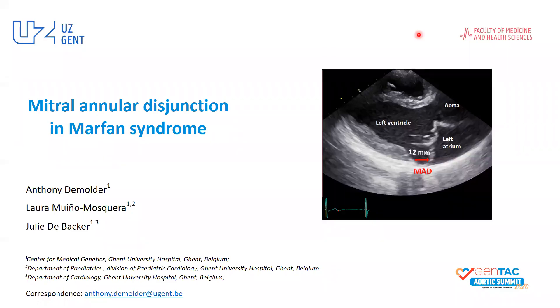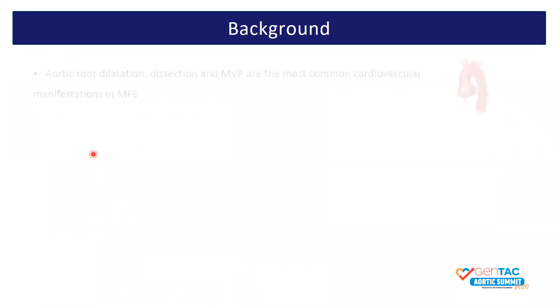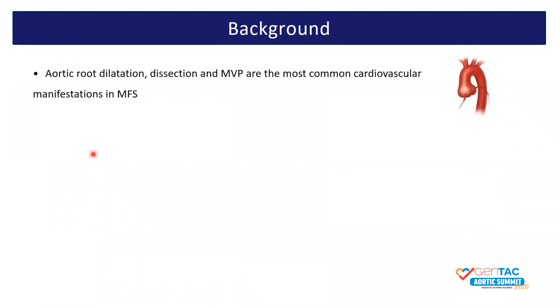Hello everyone, my name is Antony de Molder, and today I will be talking to you about mitral annular disjunction in Marfan syndrome. In patients with Marfan syndrome, the most common cardiovascular manifestations include aortic root dilatation, dissection, and mitral valve prolapse.